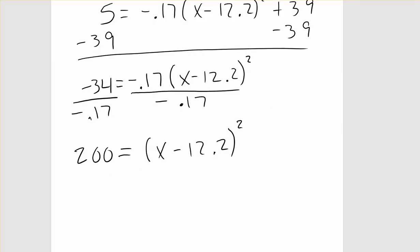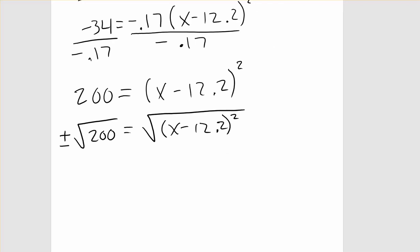Our next step is going to be dividing both sides by negative 0.17. At this point to undo the square, we are going to take the square root of both sides of our equation. Remember that when we take the square root of both sides of an equation, we do get two values, one positive and one negative. And also remember that the point of taking the square root is that the square root and the square are going to cancel, leaving us just with X minus 12.2 on the right. Adding 12.2 to both sides will allow us to solve for our two X values in the calculator.